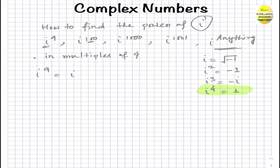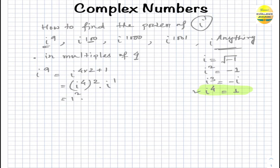Let's take the example of i to the power 9. Nine can be written in multiples of four as 4 times 2 plus 1, since 4 times 2 is 8, and 8 plus 1 is 9. So we can write this as i to the power (4×2) times i to the power 1. Since i to the power four is one, we get one squared times i to the power one.